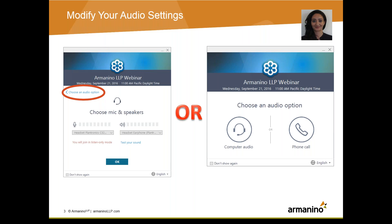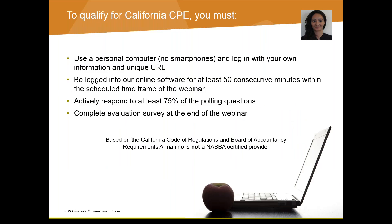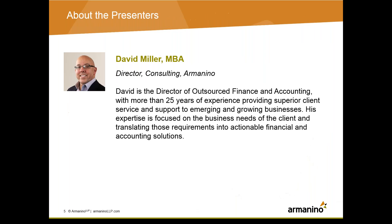Now I'd like to present a quick review of our California CPE requirements. To qualify for California CPE you must use a personal computer — no smart phones — and log in with your own information and unique URL. You need to be logged into our online software for at least 50 consecutive minutes within the scheduled time frame. You'll also need to actively respond to at least 75% of the polling questions and complete the evaluation survey at the end of the webinar.